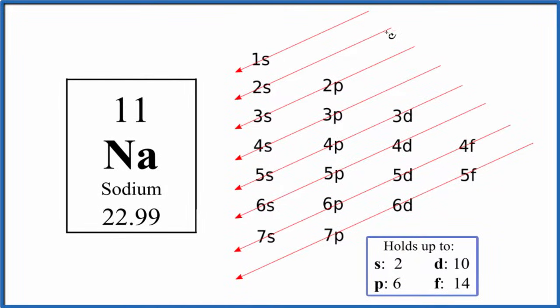Just a quick video on how to use the diagonal rule. Use this table here to write the electron configurations for elements on the periodic table.